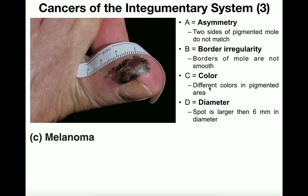C stands for color — if the mole has different pigments in different areas, it's more likely a melanoma. For example, this one shows a little white, some black, and a reddish-brown, which is a sign of melanoma. D stands for diameter — if the spot is larger than six millimeters in diameter, it's very likely a melanoma. This example appears to be closer to 20 millimeters, which is much larger than six.